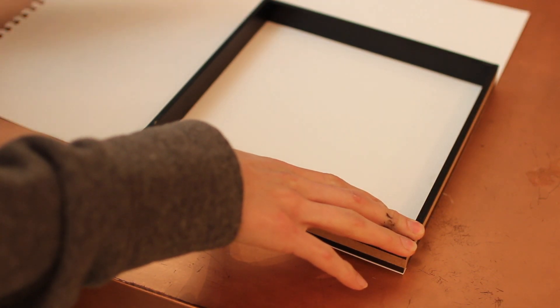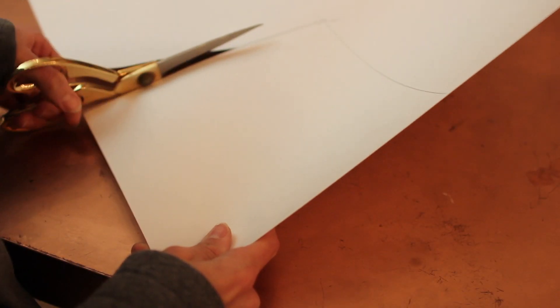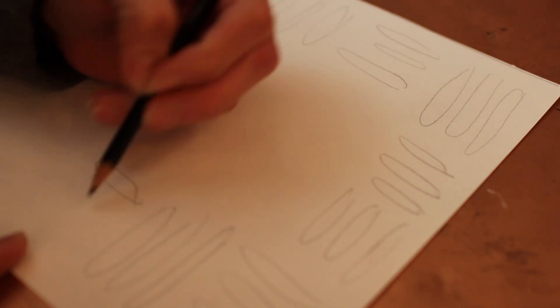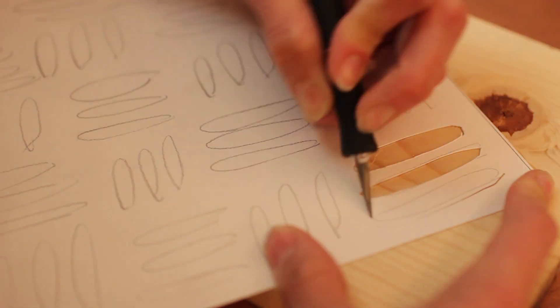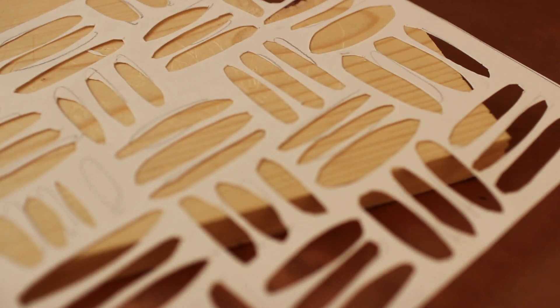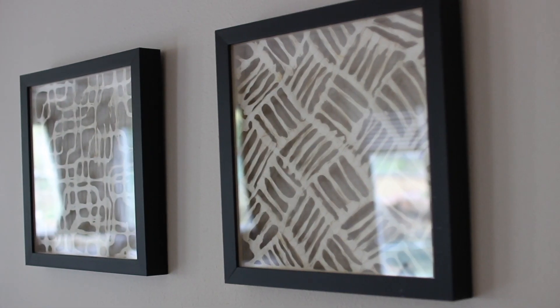Trace out the piece of paper that fits your frame. Cut that out and begin to draw your pattern or quote or whatever it is you want in that frame onto that piece of paper, and then cut that out with your X-Acto knife. I did these little circle things to kind of replicate something we already had from HomeGoods downstairs.